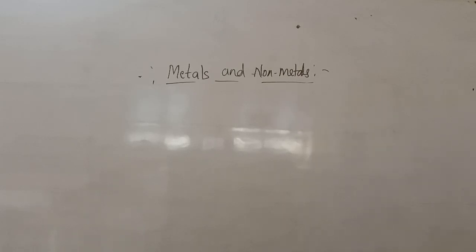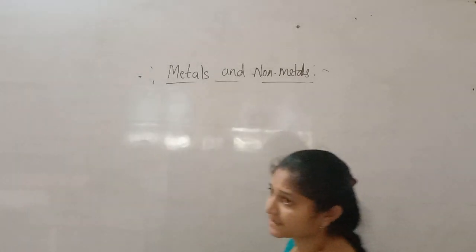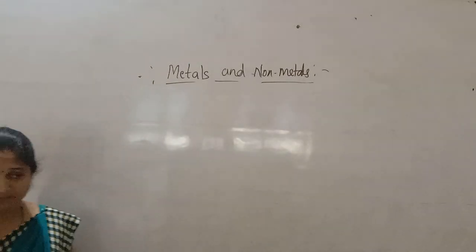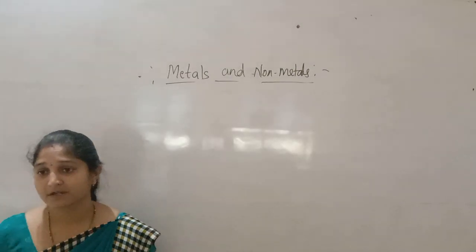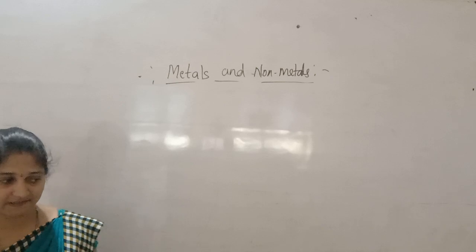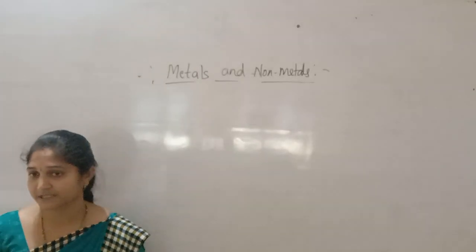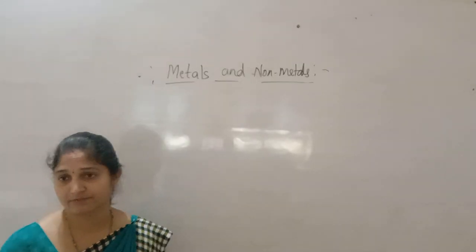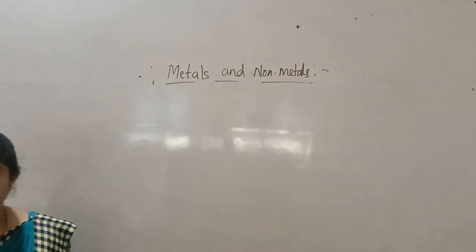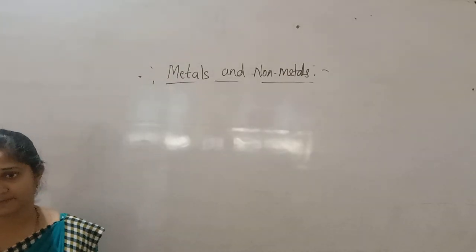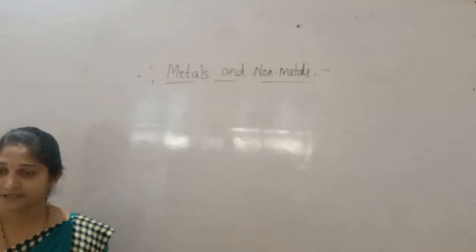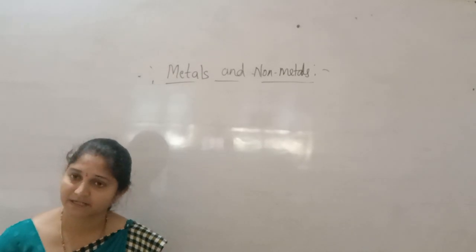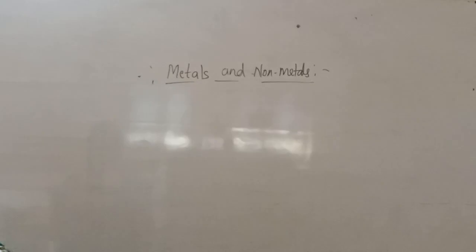Metals are malleable and ductile. Almost all metals are solid in nature, except mercury, which is liquid at room temperature. Metals are good conductors of heat as well as electricity — thermal conductivity for heat and electrical conductivity for electricity. Both thermal and electrical conductivity are good in metals.